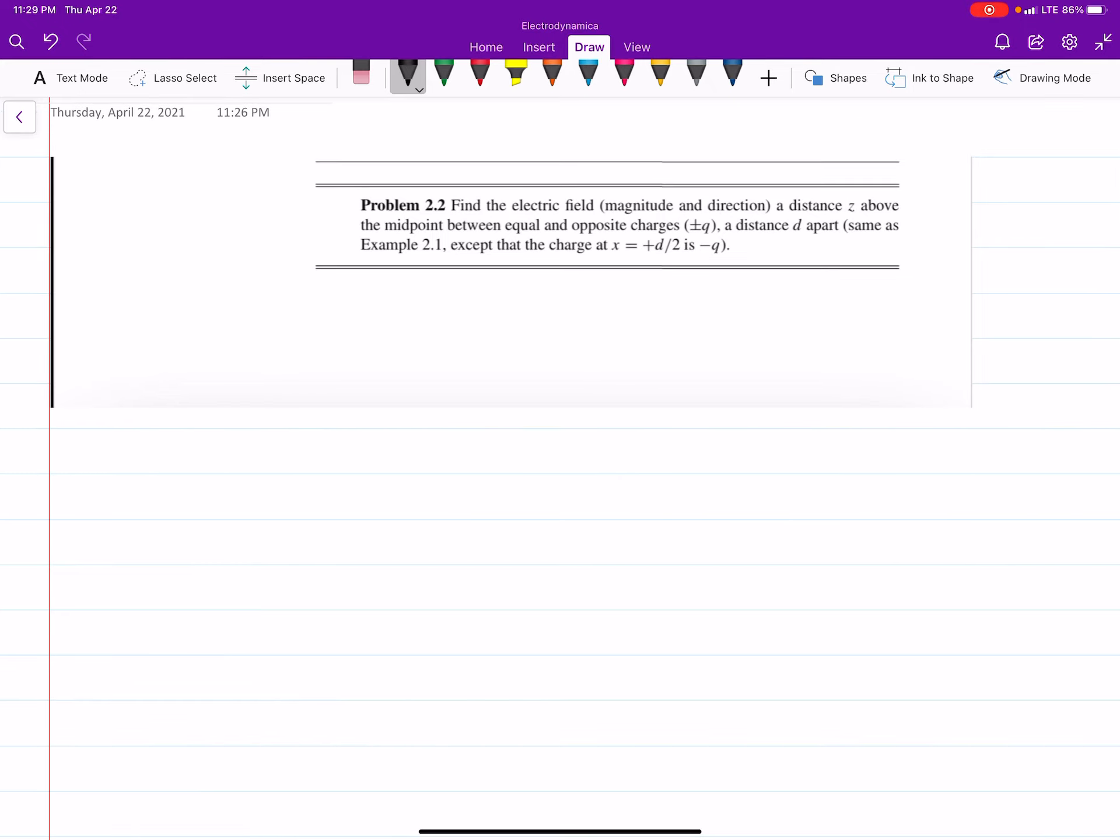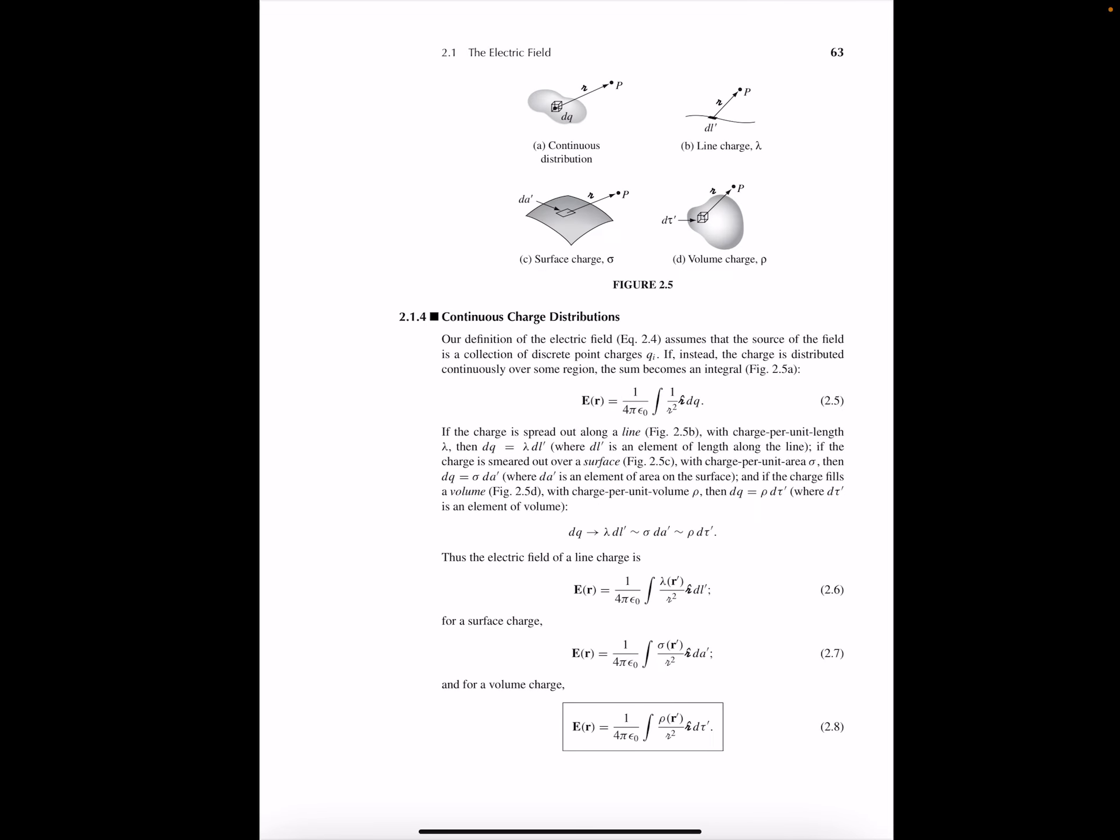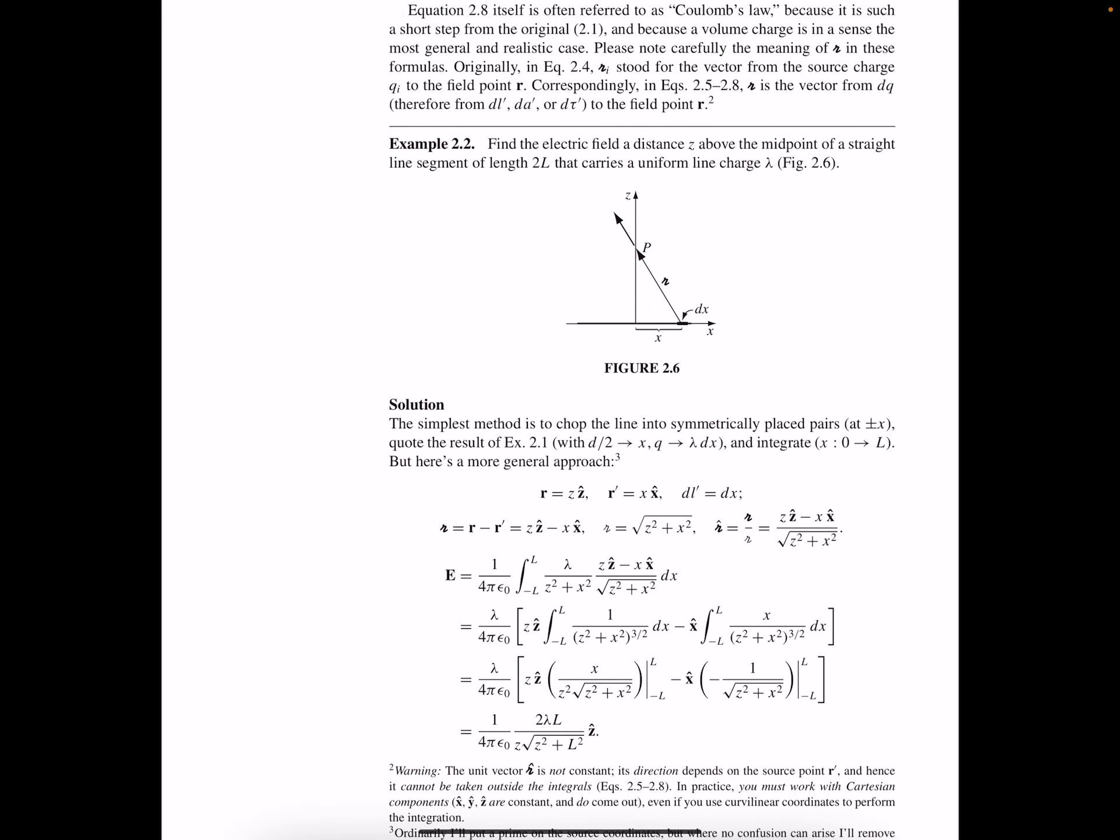We're starting with Chapter 2. We'll finish in Chapter 6, hopefully. And the first one says, find the electric field a distance z above the midpoint between equal and opposite charges plus and minus q, a distance d apart. Same as Example 2.1, except the charge at x equals plus d over 2 is negative q. So if you wanted to follow along, they do an example problem, Example 2.2, and it's incredibly similar.